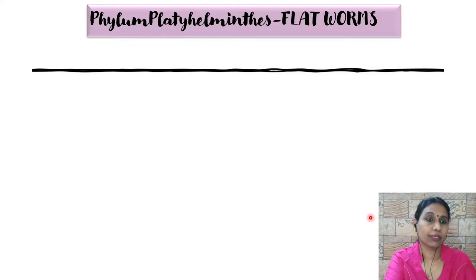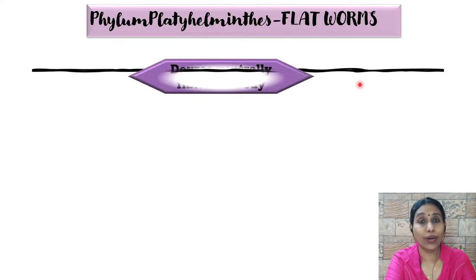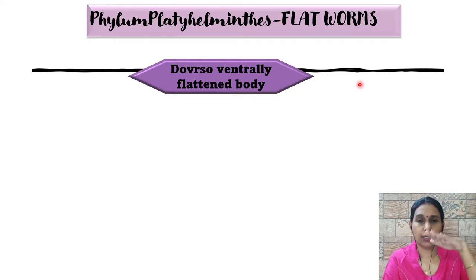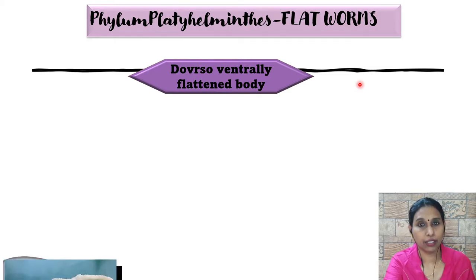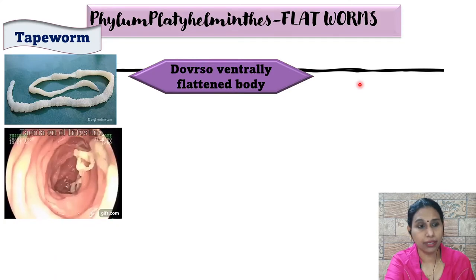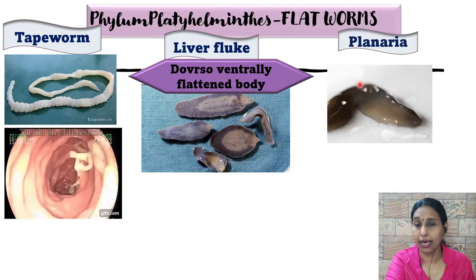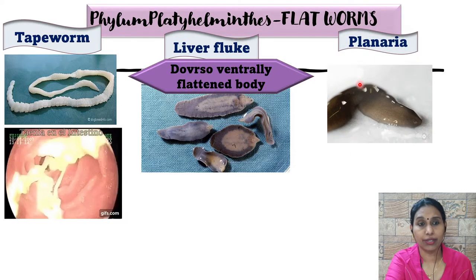Phylum Platyhelminthes is called the flatworms because of the organization of the body — they have a dorso-ventrally flattened body. The dorsal and ventral surfaces are completely flattened. Examples include tapeworm, liver fluke, and planaria, and all these organisms are dorso-ventrally flattened.